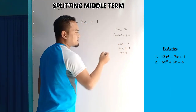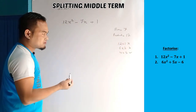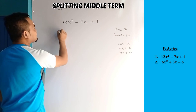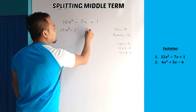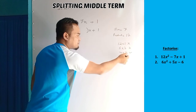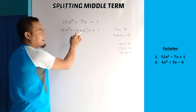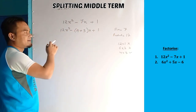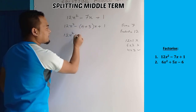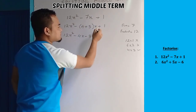4 plus 3 is 7 — that works. This is how it works. So we split the middle term: 12x squared minus 4x minus 3x plus 1.